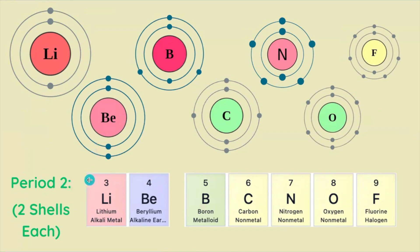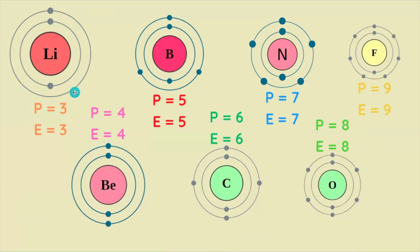So the valence shell, the outer shell, is shell 2. We're adding a proton and an electron with each successive element as we proceed left to right. So the number of protons and electrons are the same per element: 3 and 3, 4 and 4, 5 and 5, until we get to 9 and 9.